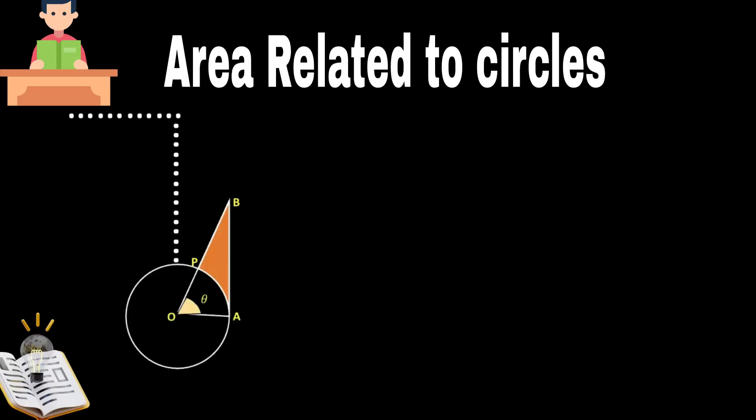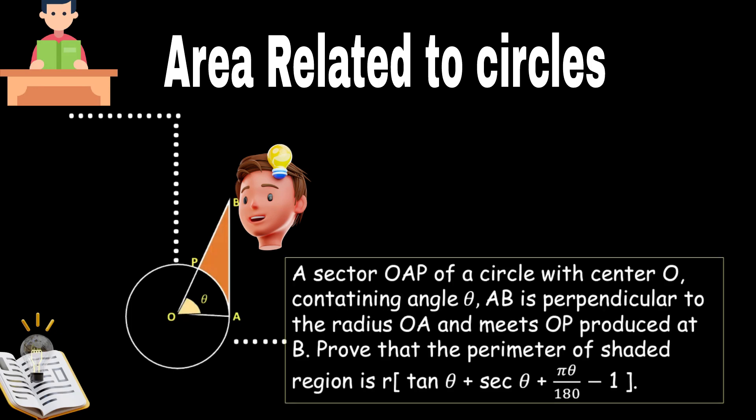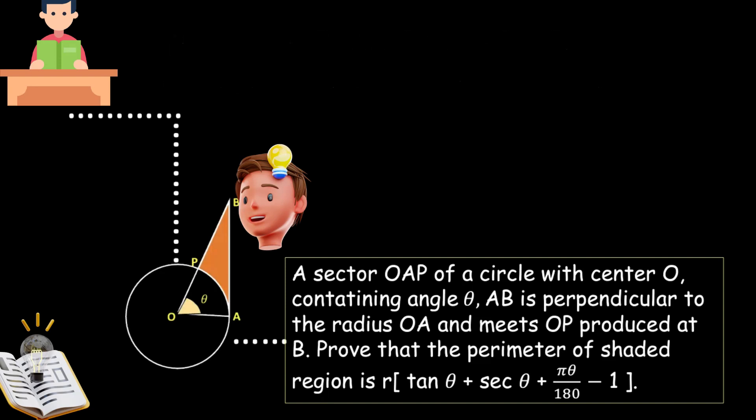Hello friends, welcome to the video on area related to circles. Let's see the question: A sector OAP of a circle with center O containing angle θ. AB is perpendicular to the radius OA and meets OP produced at B. Prove that the perimeter of shaded region is r(tan θ + sec θ + πθ/180 - 1).